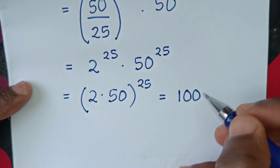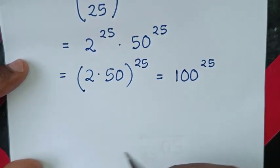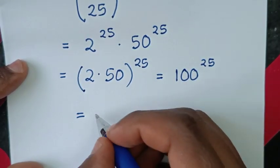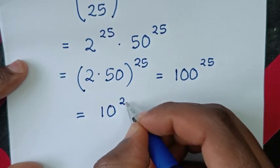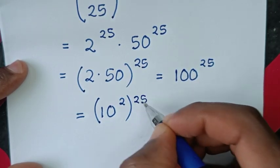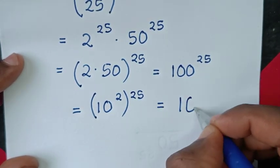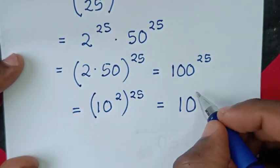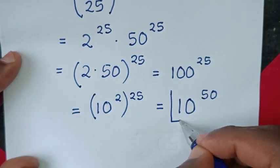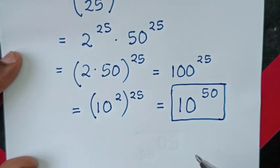2 times 50 is 100, so we have 100 power of 25. Then 100 is the same as 10 squared, so 10 squared to the power of 25 equals 10 power of 2 times 25, which is 10 power of 50. So 10 power of 50 is our final answer.